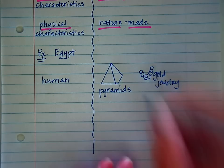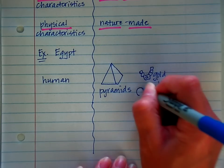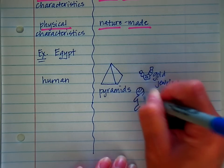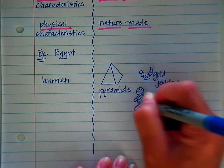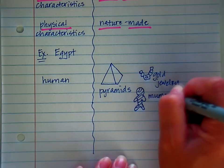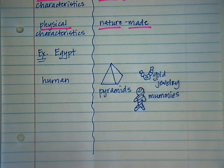Another physical characteristic of Egypt that you may not have thought about, but it is human-made, mummies. And yes it looks like a gingerbread but it really is a mummy.